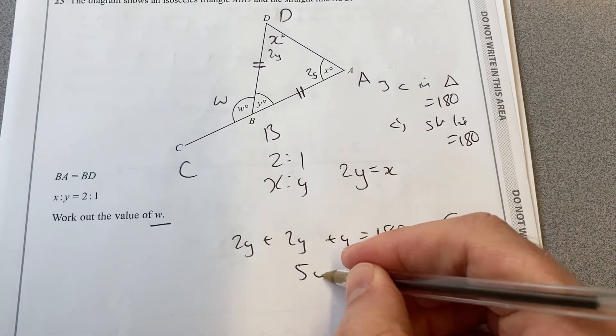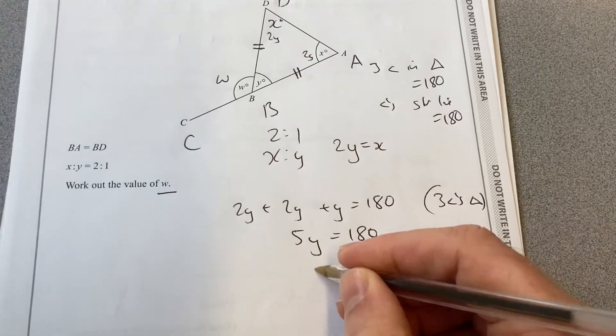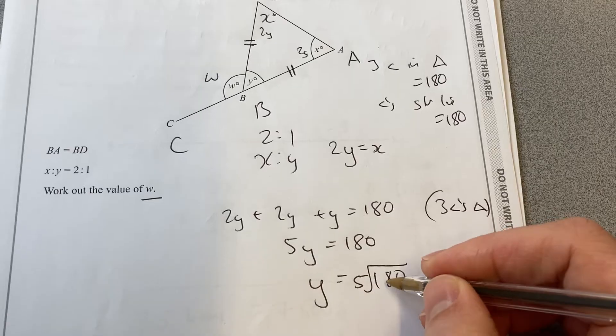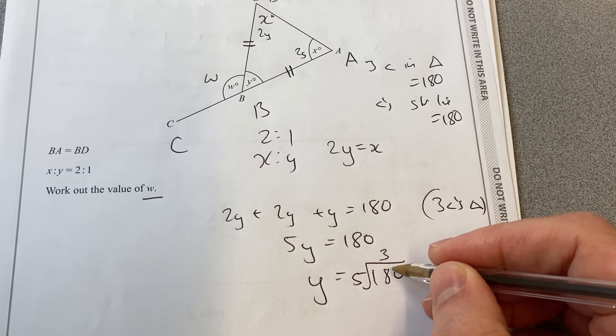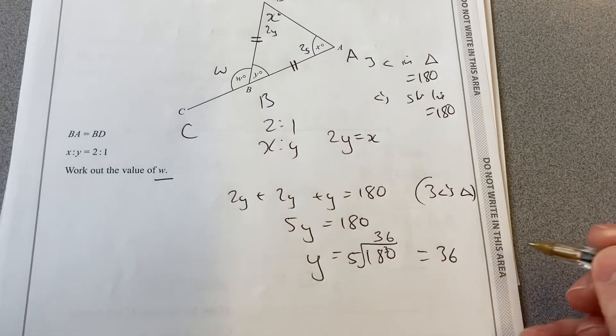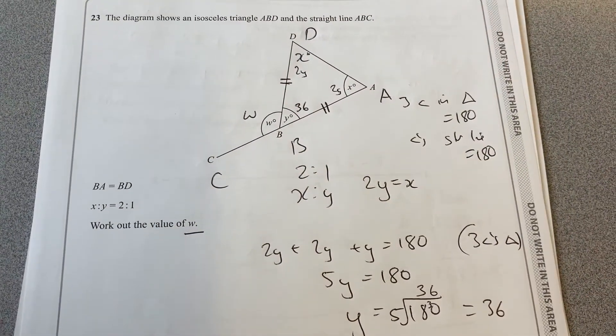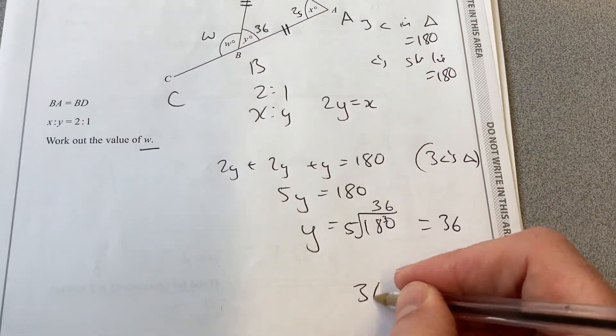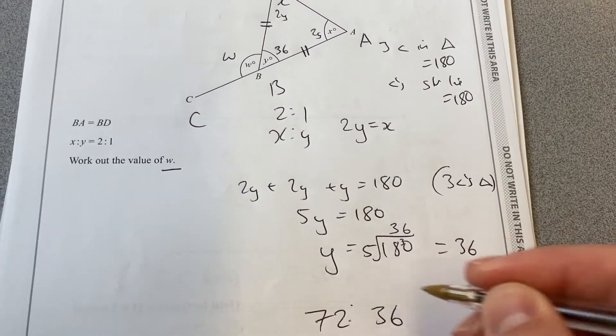So then I know that 5Y equals 180. So Y equals 180 divided by 5, which is 36. So this angle here is 36. So put that back into that ratio. X is then 72.